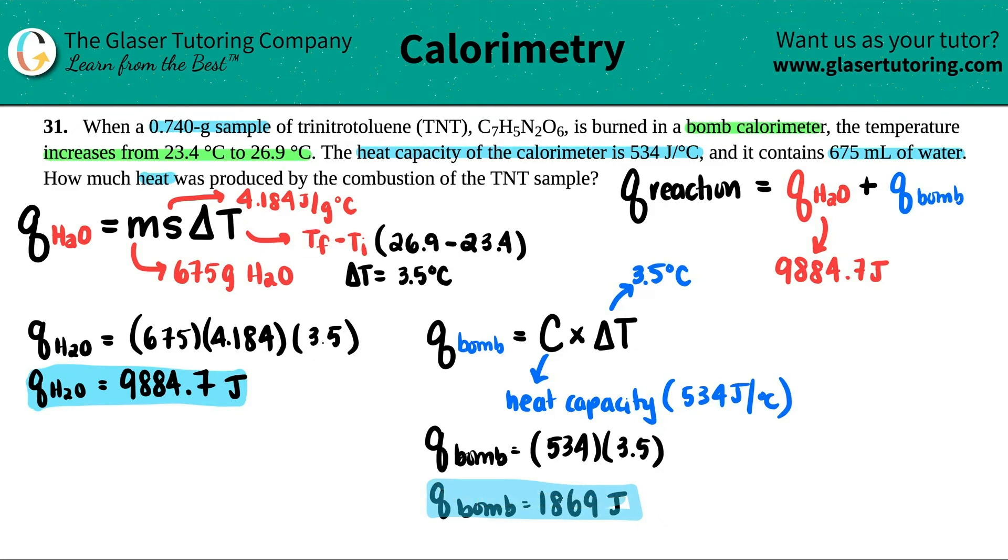So now we found the two components. Let's find out what the total amount is. So this is now 1869 joules. And all we got to do is just add them together. Look at that. So 9,884.7 plus the 1869. And finally we get the Q of the reaction. Let's see. 9,884.7 plus 1869. I'm looking back here. I see that everything is in 3 sig figs.